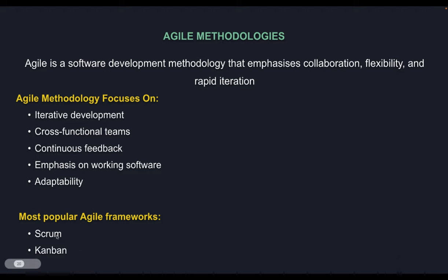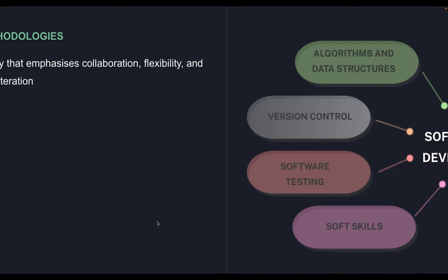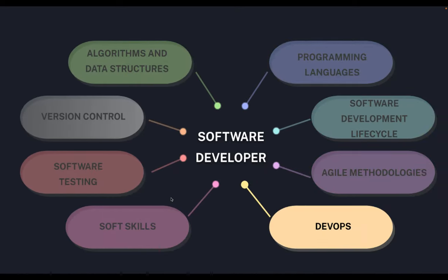The most popular agile frameworks are Scrum and Kanban. Most teams these days are adopting Scrum, which also has many varieties. As a developer, you are not working in silos — you work in teams and need collaboration. You need to follow these frameworks and their rules so that you are working in sync with your team and with the requirements.